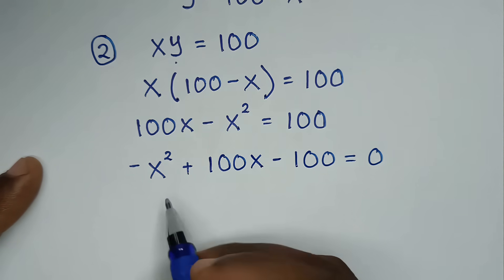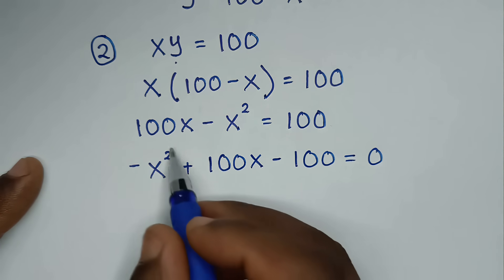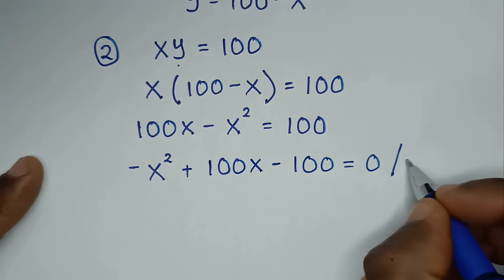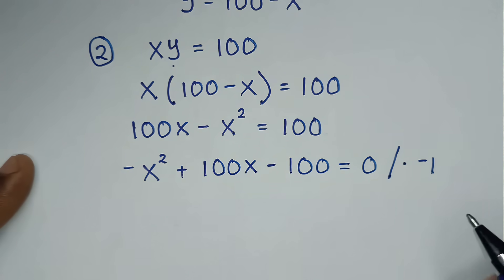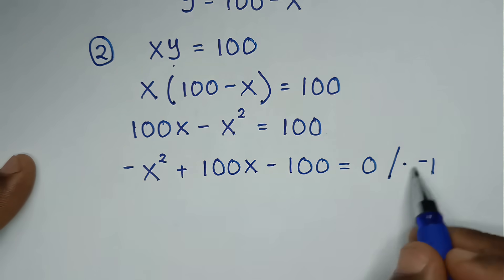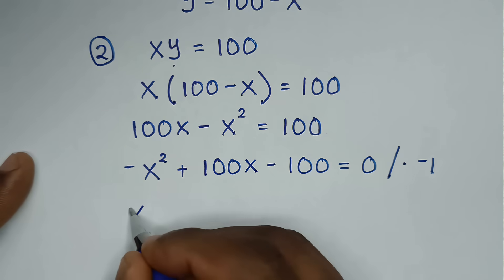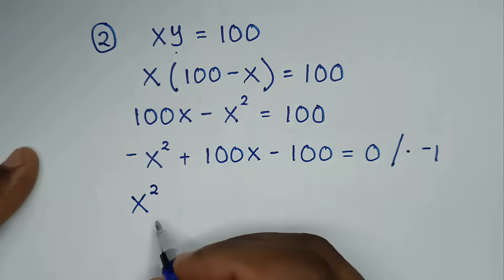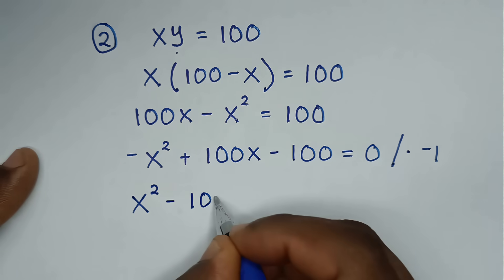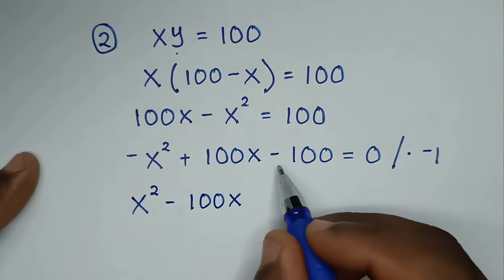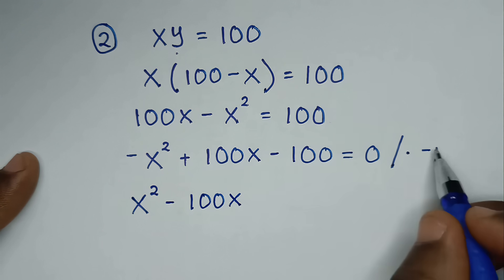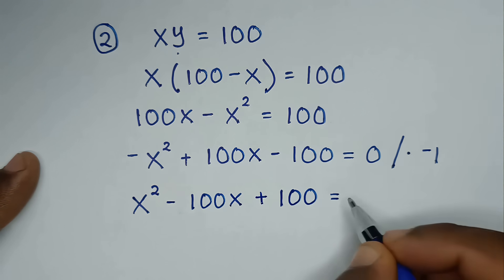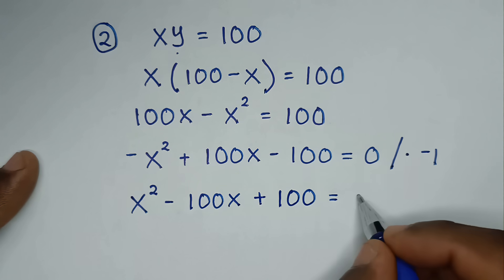Now into this equation, we have negative x squared, and we want to make this positive. So we'll multiply the whole equation by negative 1. It will be negative x squared times negative 1 is positive x squared, then 100x times negative 1 is minus 100x, then minus 100 times negative 1 is positive 100, equal to 0.